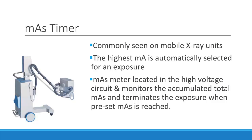The MAS timer is commonly utilized on mobile x-ray units. The highest safe MA is automatically selected for an exposure. An MAS meter in the high voltage circuit monitors the accumulated total MAS and terminates the exposure when the preset MAS is reached. This is why when an exposure is set on a mobile unit, the overall MAS is selected and the MA and time cannot be controlled by the radiographer individually.